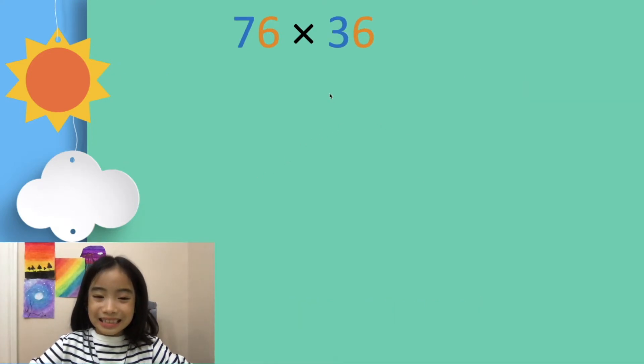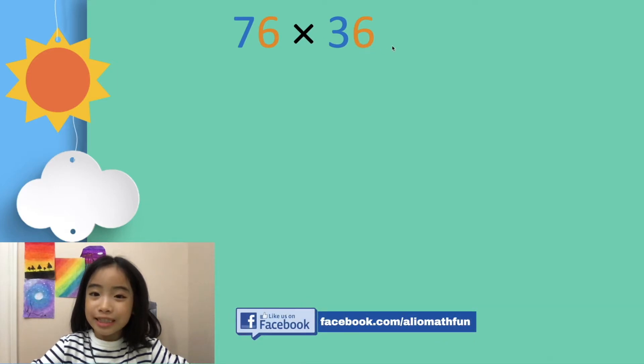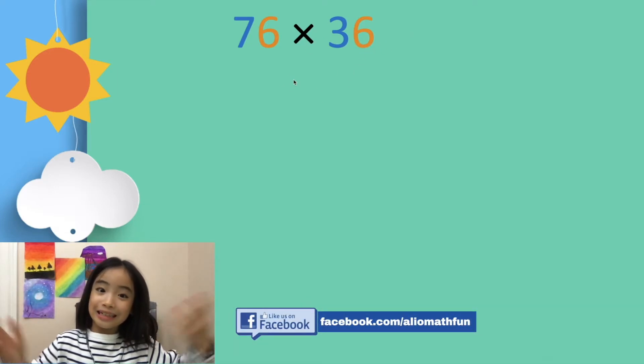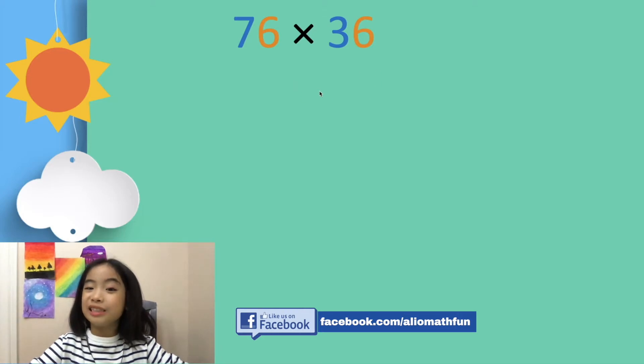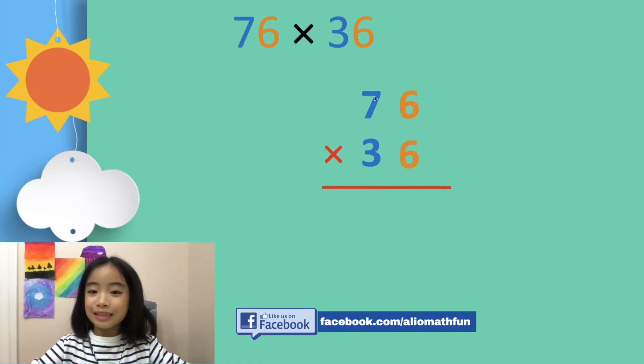Now, let's look at another example: 76 times 36. So what's the answer? Let's use our new method. First, we put it in our vertical form, then we split it in half.